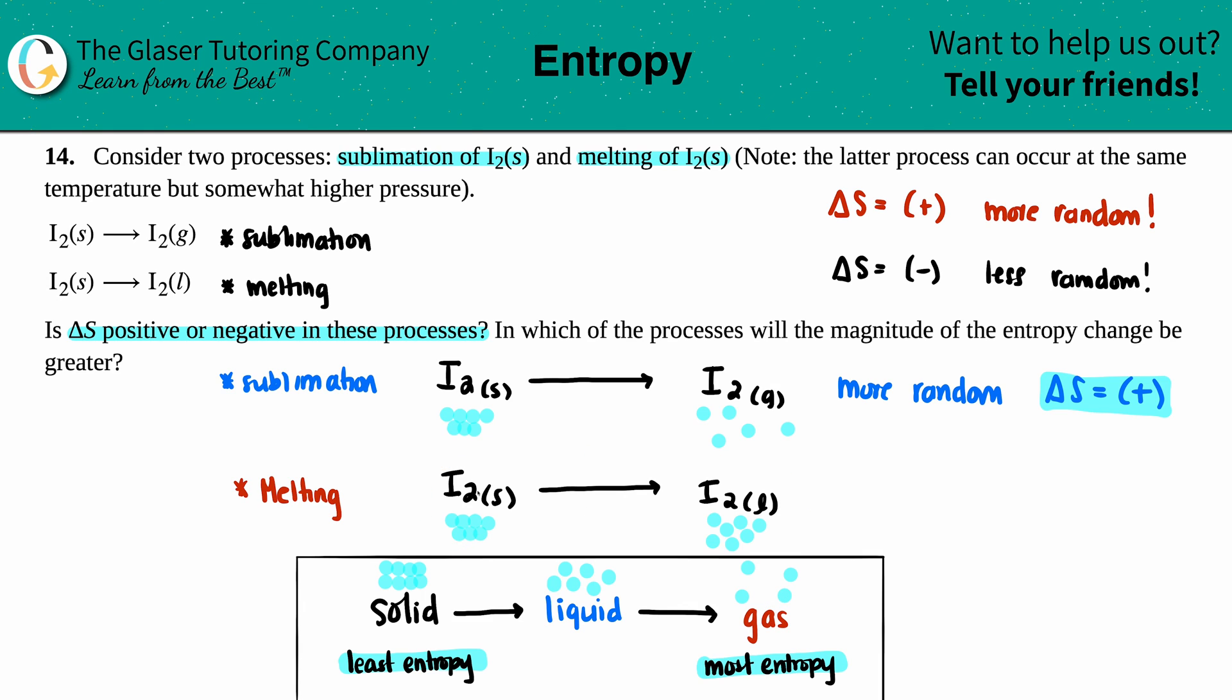Am I going from something that is more random or less random? Yeah, still more random, more chaotic. So in this case, they both would have a ΔS that's a positive value. So we answered the first question: Is ΔS positive or negative in these processes? For sublimation, ΔS is positive, and for melting, ΔS is also positive.